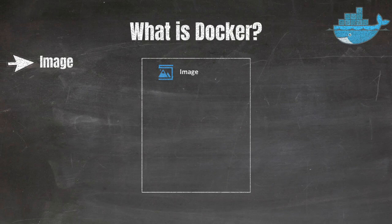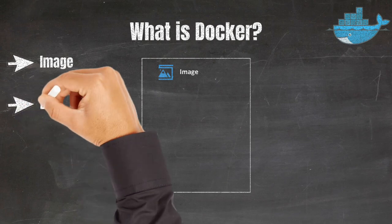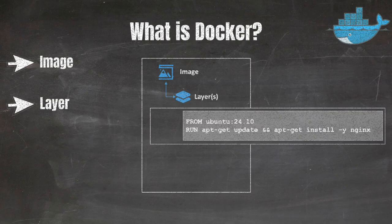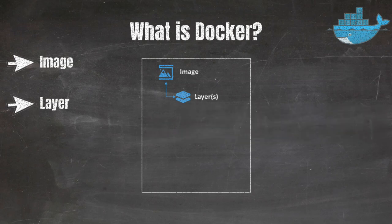Another key concept is layers. A Docker layer is a read-only filesystem change in the image, representing a specific instruction in the Dockerfile. For example, starting from the Ubuntu 24.10 image is the first layer, and a RUN command that installs nginx creates a second layer on top of the Ubuntu base image.